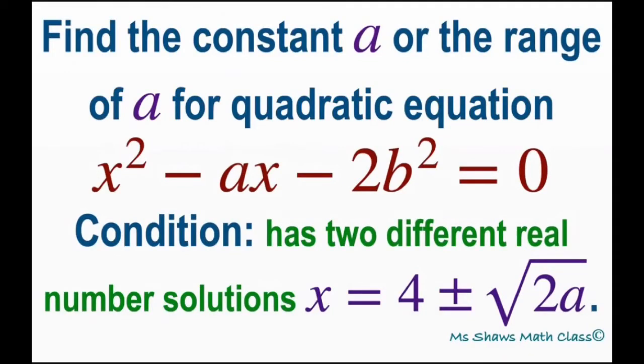Hi everyone, we're going to find the constant A or the range of A for a quadratic equation x squared minus Ax minus 2b squared equals 0.